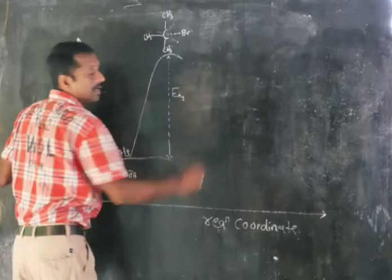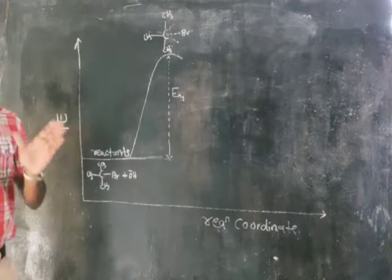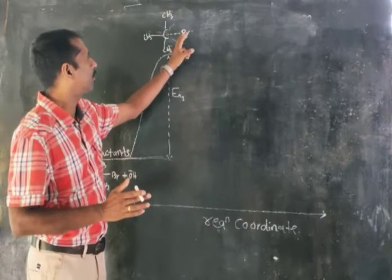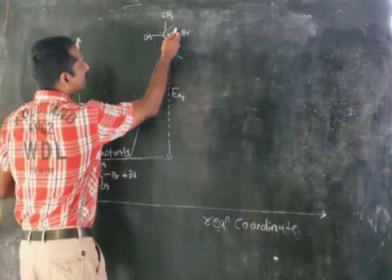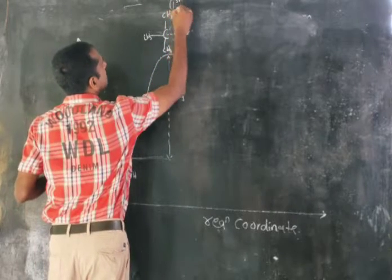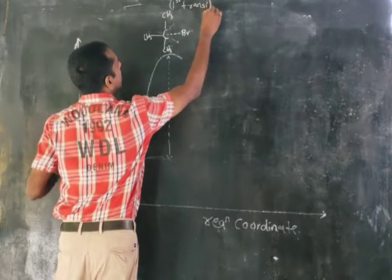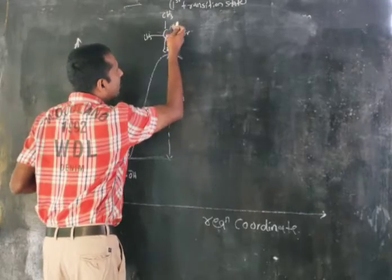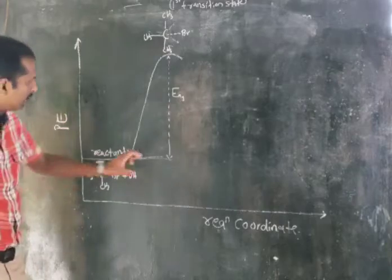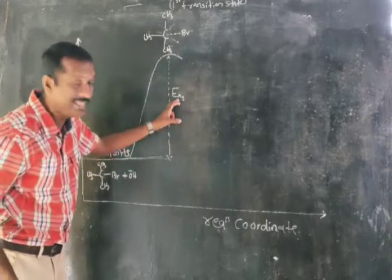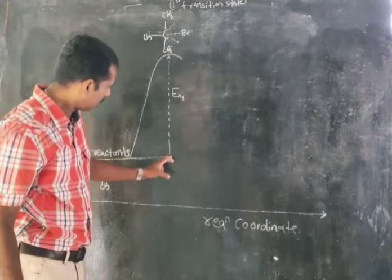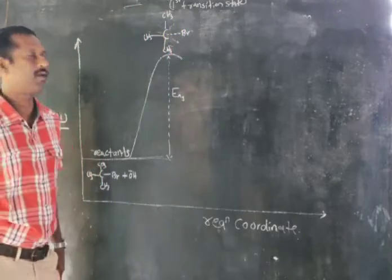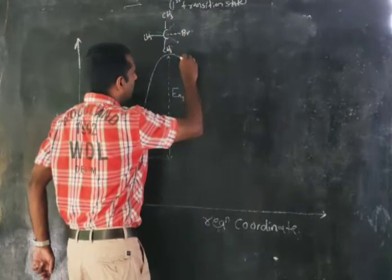Listen carefully: in the SN1 mechanism, the mechanism begins with the slow cleavage of the C–X bond. The C–X bond breaks heterolytically — this is the first transition state. The energy required for that heterolytic cleavage of the C–X bond is EA1, the first activation energy. When the C–X bond is completely broken, it changes into the first intermediate.